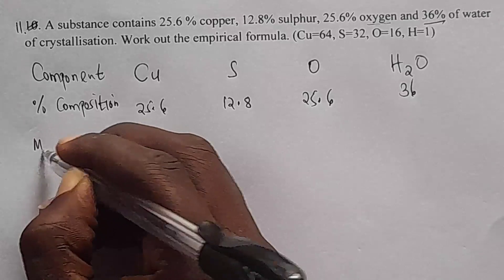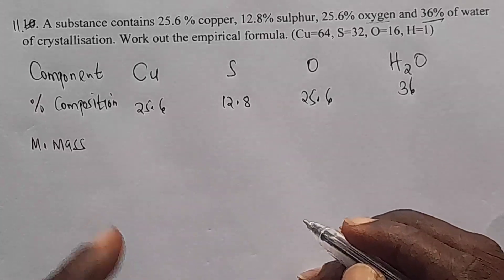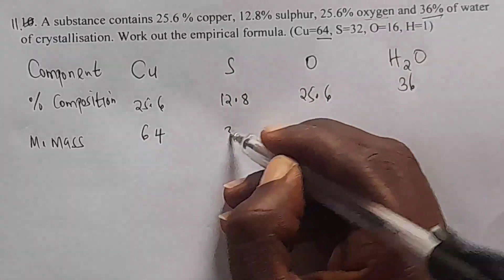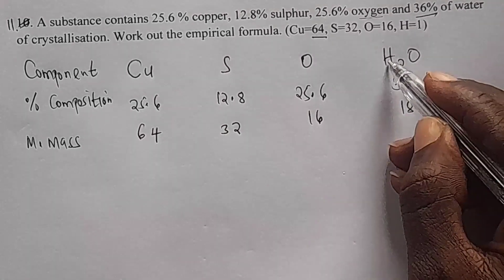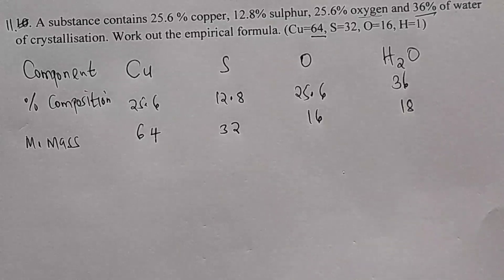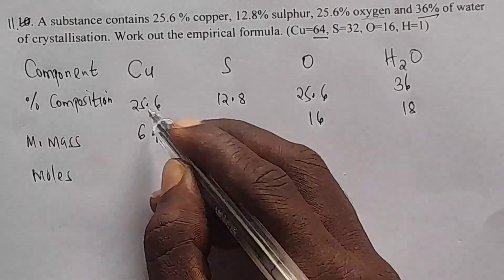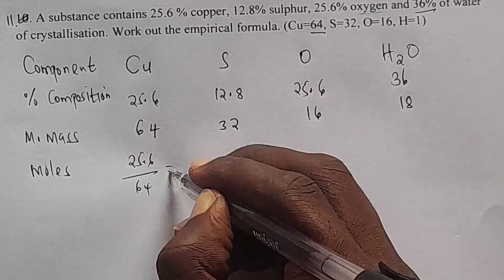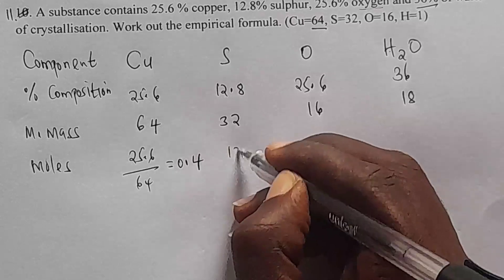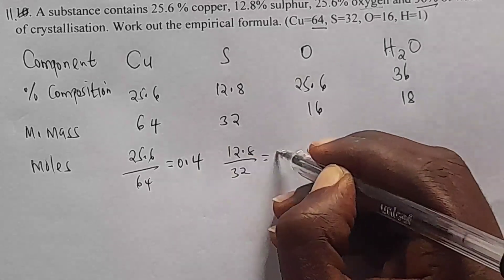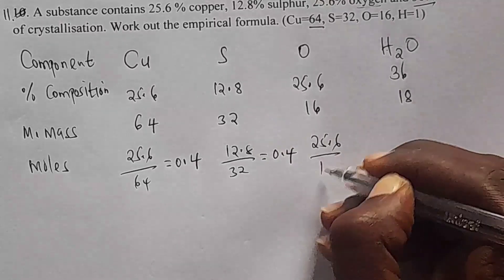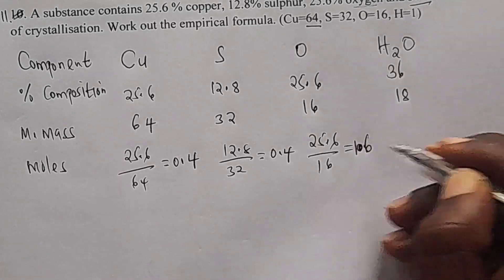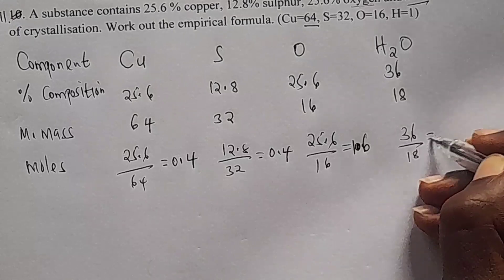Next, the molar masses: copper is 64, sulfur is 32, oxygen is 16, and water is 18 (because 2 times 1 plus 16). Now moles: 25.6 over 64 gives 0.4 for copper. 12.8 divided by 32 gives 0.4 for sulfur. 25.6 divided by 16 gives 1.6 for oxygen. And 36 divided by 18 gives 2.0 for water.